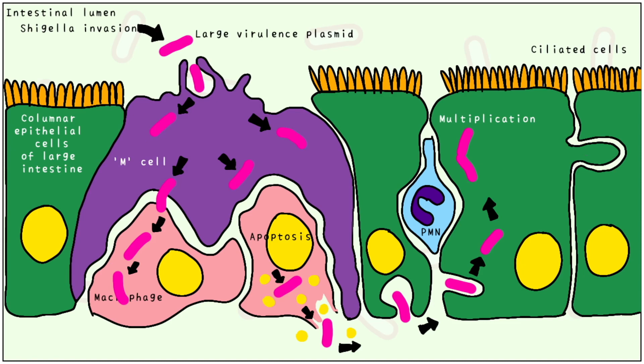Remember, Shigella is non-motile, so it requires the assistance of actin to spread from cell to cell. It slides along actin stress cables, where it causes polymerization of the host cells.